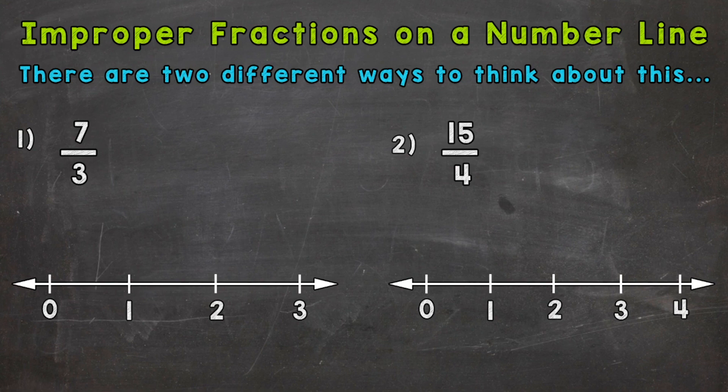And we have two examples that we're going to go through together in order to get this down. So let's jump right into number one, where we have 7 thirds. And the first thing that we should do is convert to a mixed number. So how many whole groups of three can we pull out of seven? So we can pull two whole groups with one left over, keep our denominator the same. So two and one third. If you need help with converting improper fractions to mixed numbers, I have a video on that. I dropped the link down in the description.